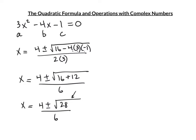Look at the square root of 28 — there are perfect squares that divide evenly into it. 28 = 4 × 7, and we can take √4. That goes in front of the root. So x = 4 ± 2√7, all over 6.